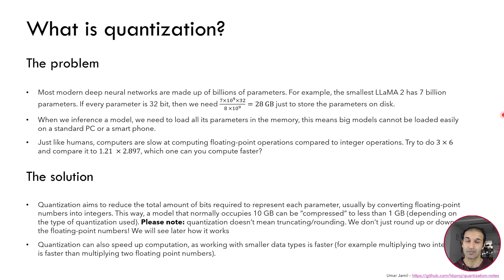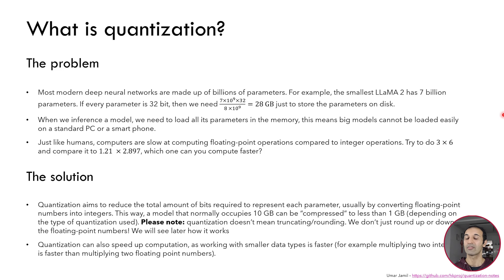So the solution is quantization. Quantization basically aims to reduce the amount of bits required to represent each parameter, usually by converting the floating point numbers into integers. This way, for example, a model that normally occupies many gigabytes can be compressed to a much smaller size. Also please note that quantization doesn't mean that we just round up or round down all the floating point numbers to the nearest integer — this is not what quantization does. We will see later how it works. And quantization can also speed up computation because working with smaller data types is faster.